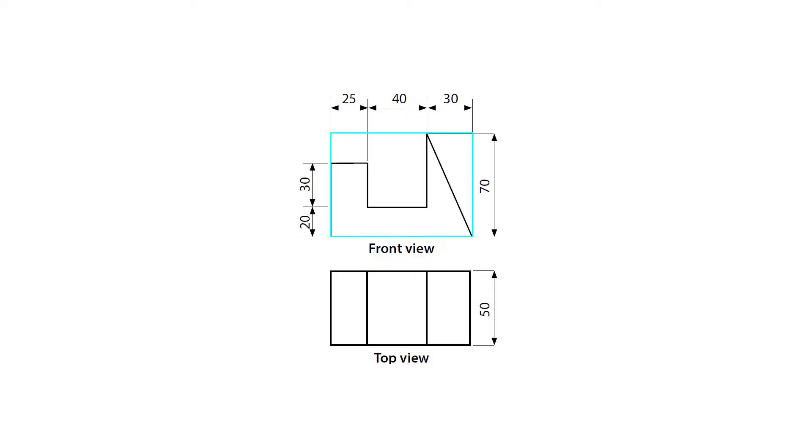To get the length for the crate of the front view, you will need to add 30 plus 40 plus 25, which equals to 95, and 70 obviously will be the height. And for the top view, the dimension will be 50 by 95.